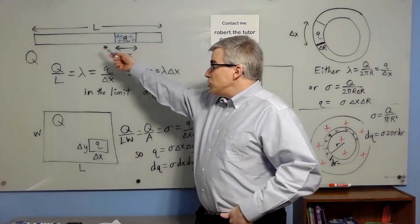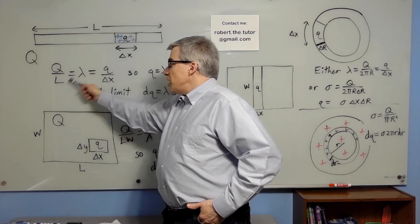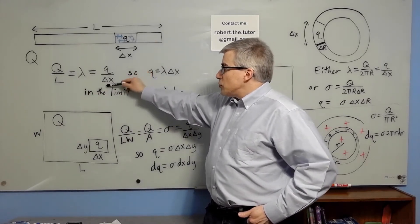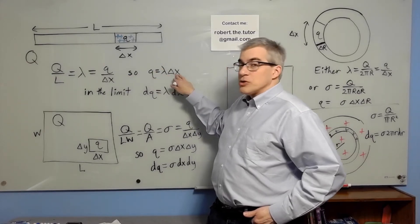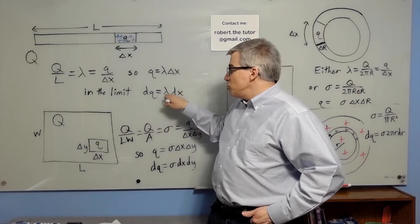If you had a stick uniformly charged, charge big Q length L, Q over L is what we call lambda, the coulombs per meter. That would also be little Q over delta x, so the amount of charge on a little piece would be proportional to the size of the piece, and infinitesimally, dQ would be lambda dx.